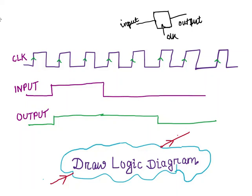Hello everyone. This question was once asked to me during a VLSI interview. I was given these three waveforms: the first one is the clock, then the second one is the input, and the third one is the output. I was asked to draw the logic diagram for this one.